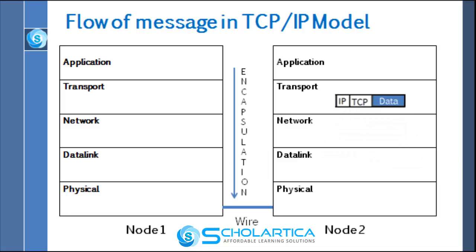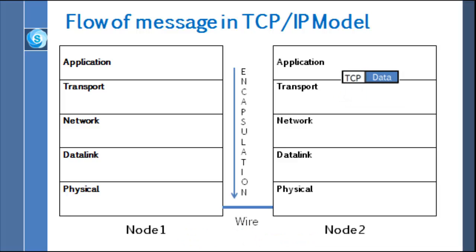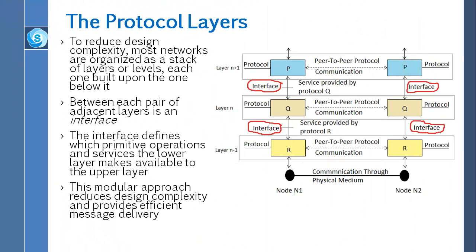To reduce design complexity, most networks are organized as a stack of layers or levels, each one built upon the one below it. Between each pair of adjacent layers is an interface. The interface defines which primitive operations and services the lower layer makes available to the upper layer. This modular approach reduces design complexity and provides efficient message delivery.